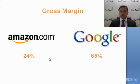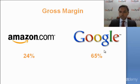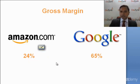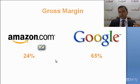But you, as a corporate finance professional, will know that just because their gross margins are different does not mean one company is worse than the other. Amazon is the number one e-commerce company, Google is the number one search company, and both are outstanding, world-class managed companies. The reason Amazon's gross margin is only 24% of revenues is because of what Amazon sells.